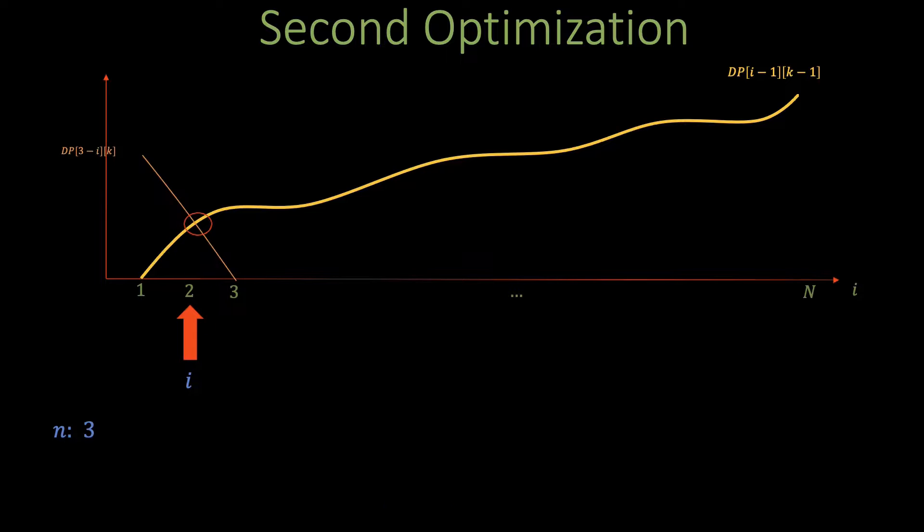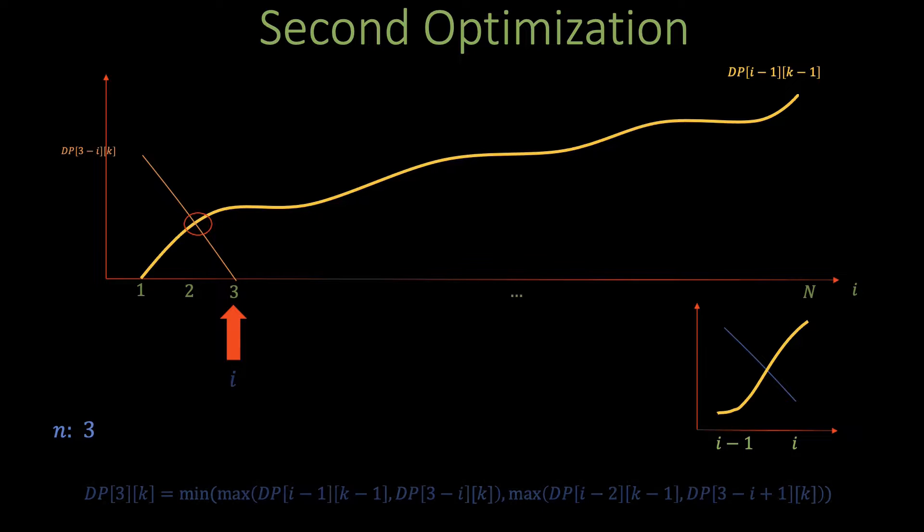Next, since we have calculated dp[2][k] we increase n to 3. The crucial observation to note is that there's no way we missed the intersection point of dp[3][k] with the yellow curve. This is because as we discussed earlier the intersections are monotonically increasing. We compare dp[3-i][k] to the yellow curve and observe that it's slightly above the yellow curve so we move i one step forward. This time dp[3-i][k] is now below the yellow curve so the intersection point is at i or one index before i. We again calculate dp[3][k] using the equation from the last video and increase n to 4.